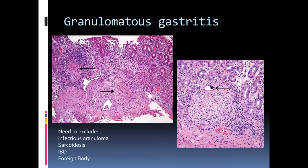Occasionally we'll see granulomatous gastritis — deep-seated granulomas, sometimes with lymphocytes, sometimes with calcified bodies. The differential is the usual one for granulomata: infectious causes, sarcoidosis, foreign body reaction, and importantly, inflammatory bowel disease. Remembering to consider Crohn's disease in the upper gastrointestinal tract is very important and can cause diagnostic discomfort if we fail to think about it.